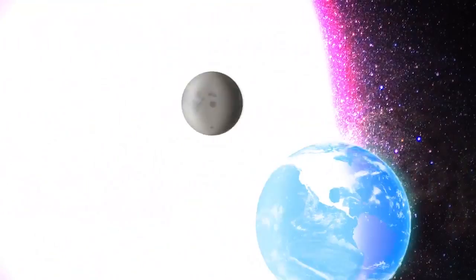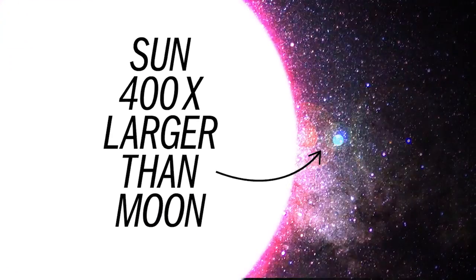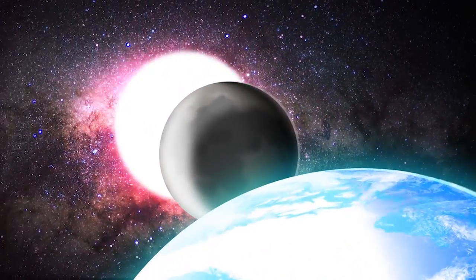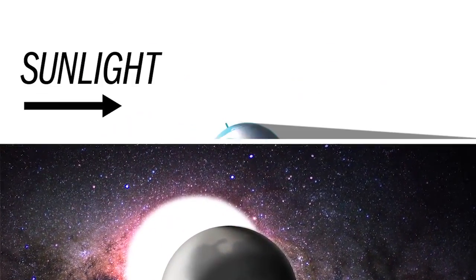The Sun is about 400 times larger than the Moon, but the Sun is also 400 times farther away, so the two bodies appear about the same size to us on Earth.